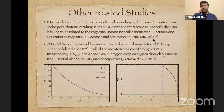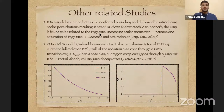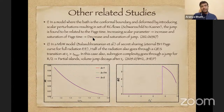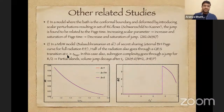Let me mention a couple of related recent studies. In a very recent paper — which appeared yesterday — we studied a model where the bath is the conformal boundary, deformed by introducing scalar perturbations resulting in RG flows from Schwarzschild to Kasner near the singularity geometry. The jump is found to be related to the page time: increasing the scalar parameter causes the page time to increase and saturate, and the jump shows similar behavior. In an earlier paper, we showed that in a multi-boundary wormhole model, even with access to only part of the radiation subsystem, there is still a QES transition for that half of the radiation, but it happens at a much later time than the page time.